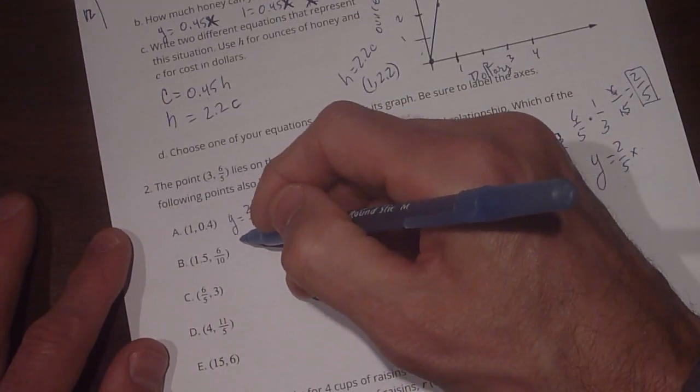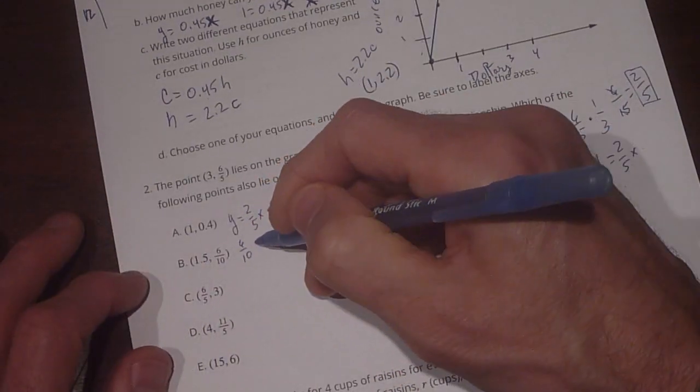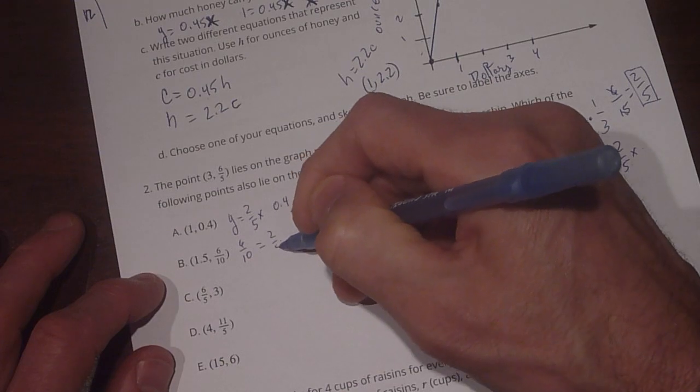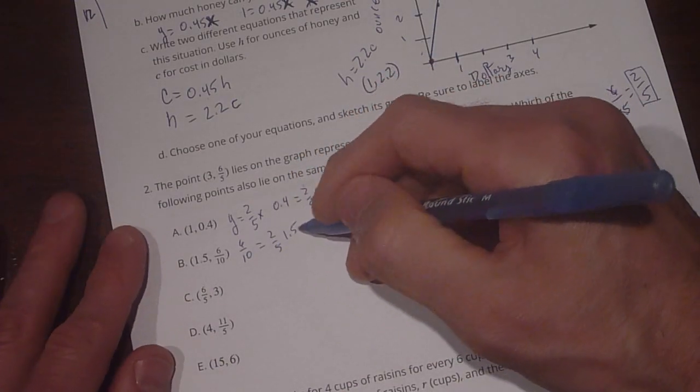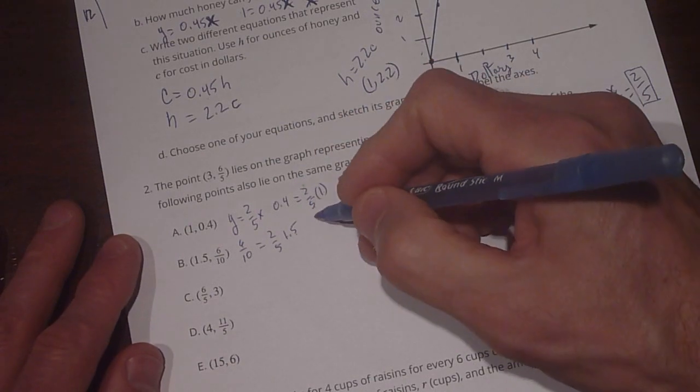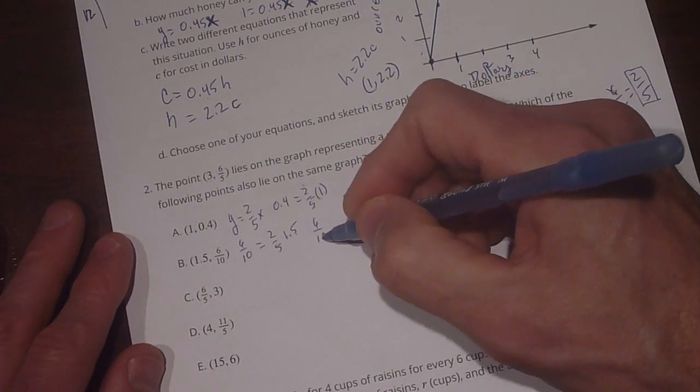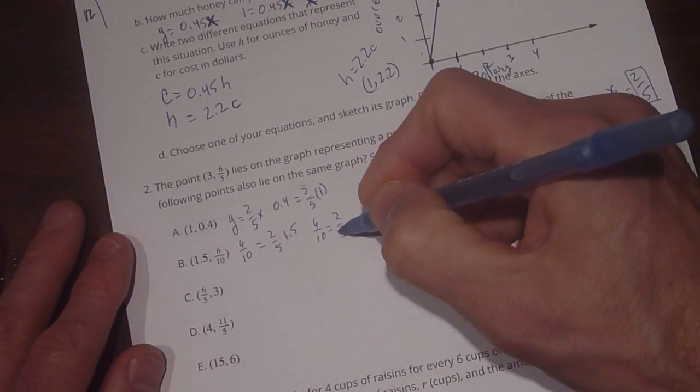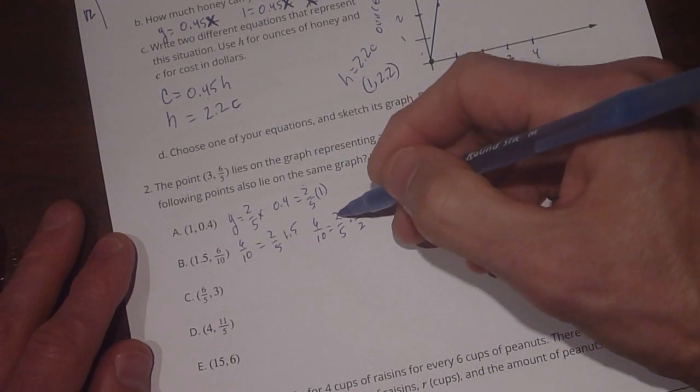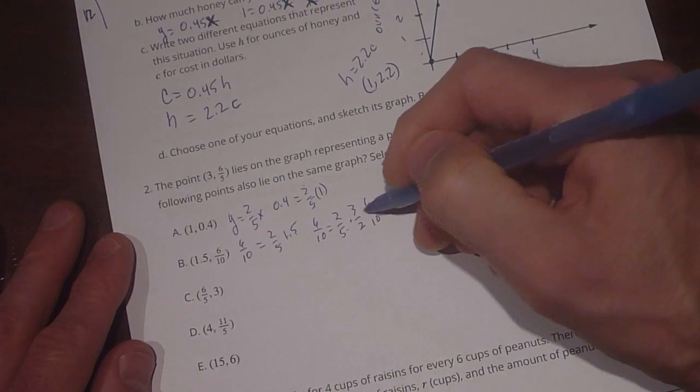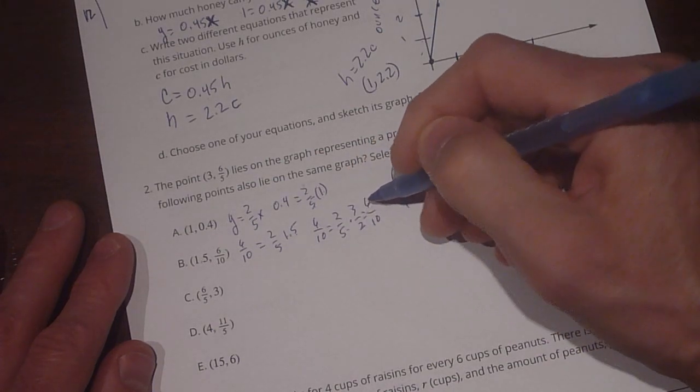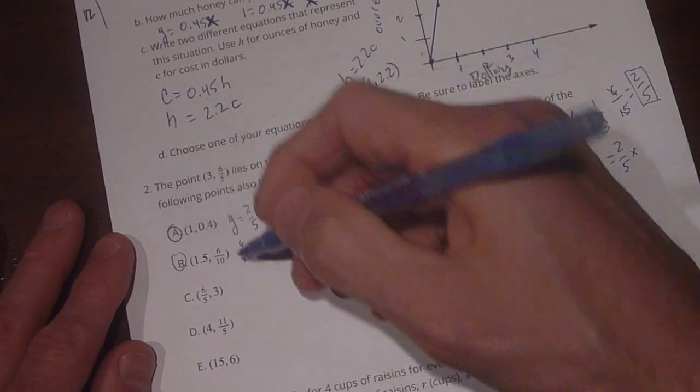All right, then we have 6 tenths for our y equals 2 fifths of 1.5. Well, I know that 1.5 is also equal to 3 halves, so 6 over 10 equals 2 fifths times 3 over 2. Let's see if that's right. 2 times 3 is 6, 5 times 2 is 10. So 6 tenths equals 6 tenths. So A and B both work.